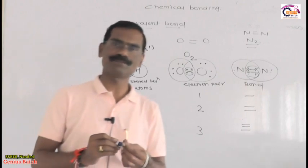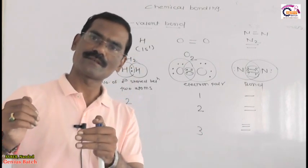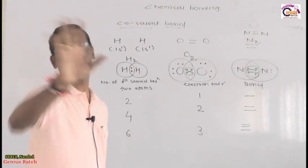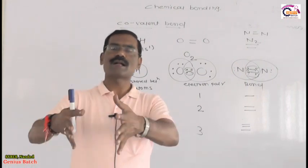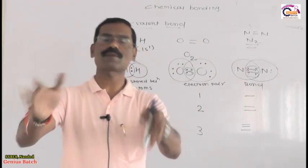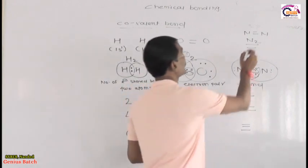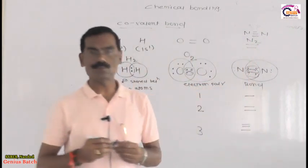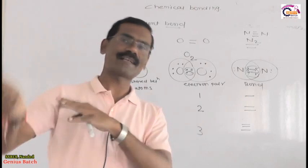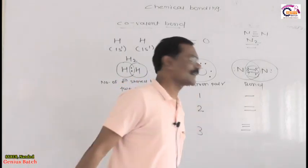This is very important: if the total number of electrons shared between 2 atoms is 2, that is 1 pair — a single bond. If 4 electrons are shared, that is 2 pairs — a double bond (as in O₂). If 6 electrons are shared between 2 atoms, that is 3 pairs — a triple bond (as in N₂).